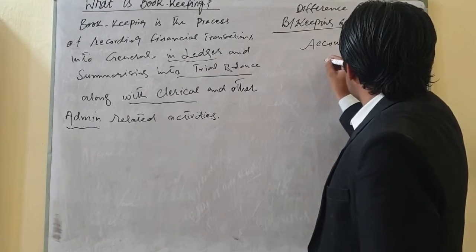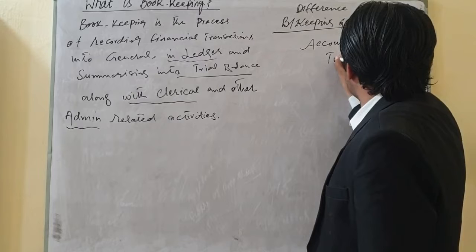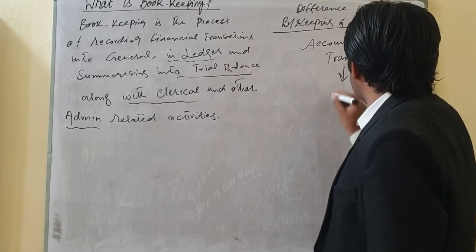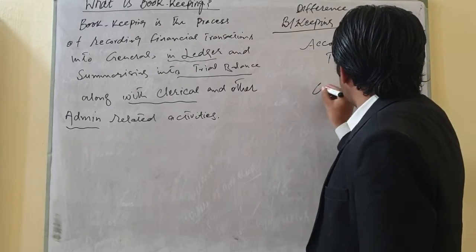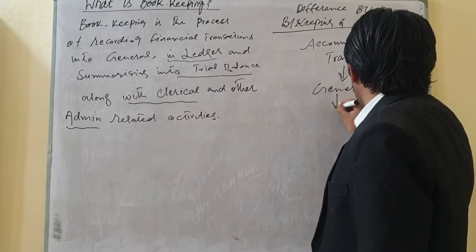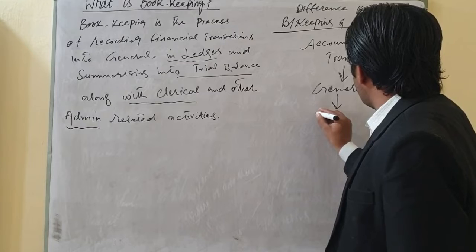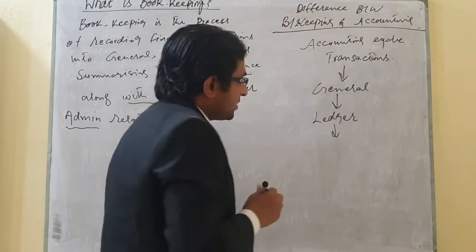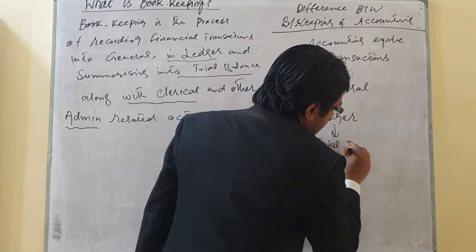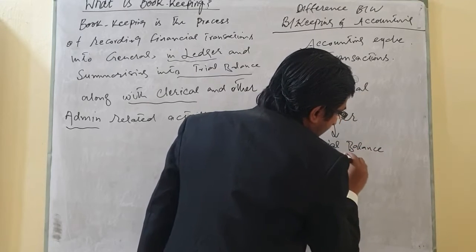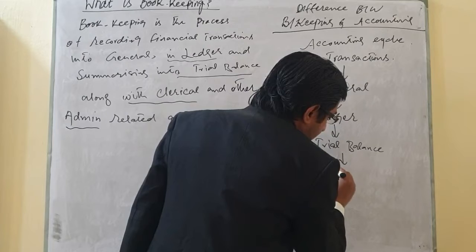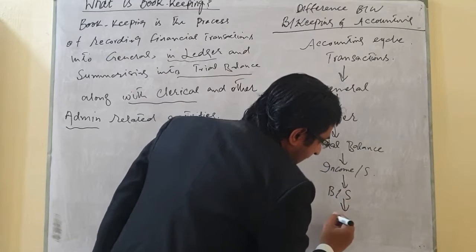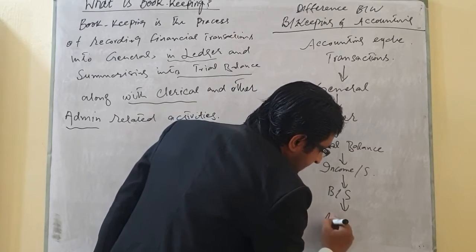The accounting cycle starts with a transaction. That transaction is then recorded in the journal. After recording into the journal, we transfer it into the ledger. After recording into the ledger, we transfer it to the trial balance. After recording into the trial balance, we go toward the income statement. After the income statement, we move toward the balance sheet, and after the balance sheet, we move toward adjusting entries.